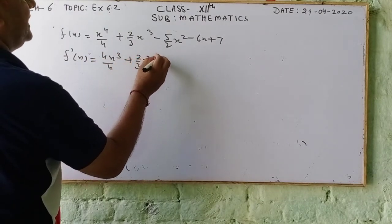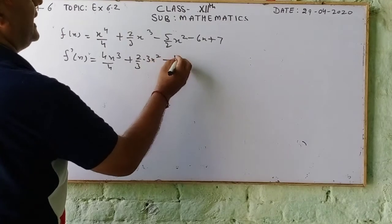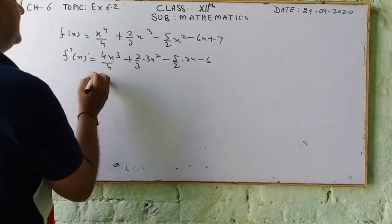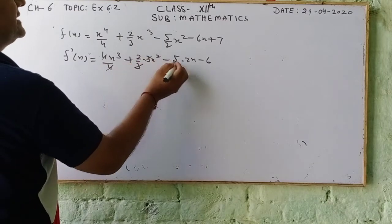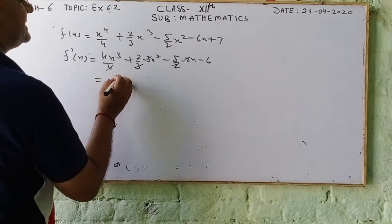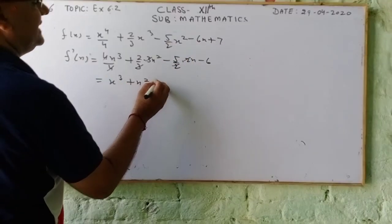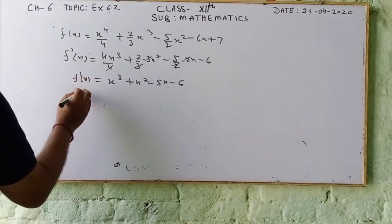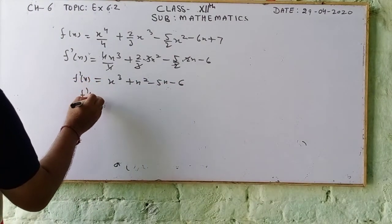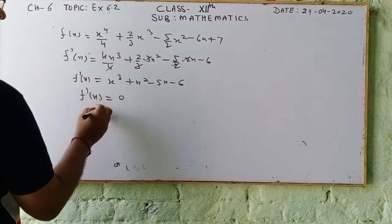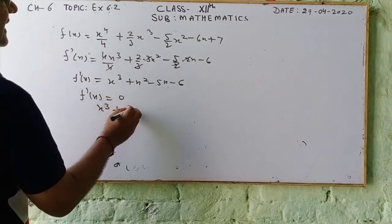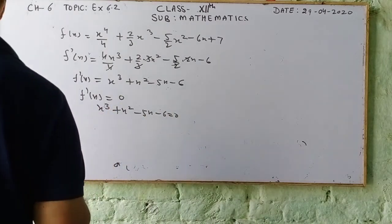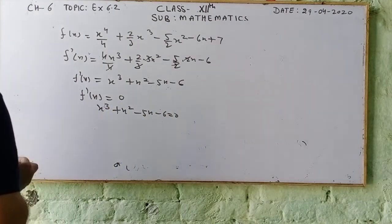Simplifying: the 4s, 3s, and 2s cancel out, giving f'(x) = x³ minus x² minus 5x minus 6. We set f'(x) equal to 0: x³ minus x² minus 5x minus 6 = 0.